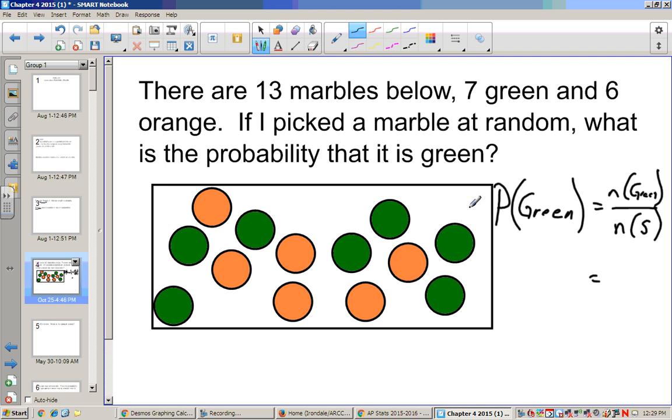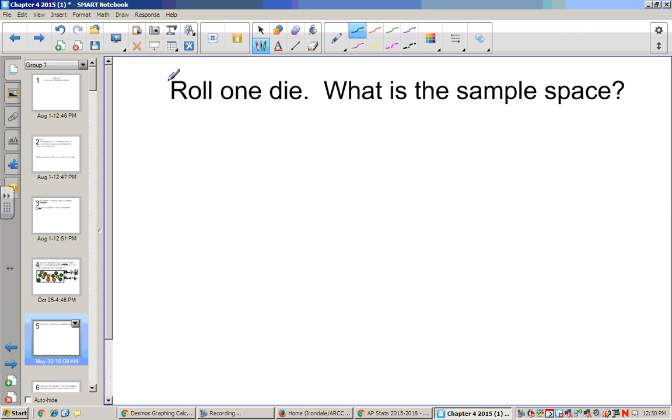So our whole sample space is everything that's inside of this rectangle, which is 13 marbles. That goes in our denominator. Now, the number of green is 1, 2, 3, 4, 5, 6, 7. So what this is saying is the probability that it's green is 7 over 13.